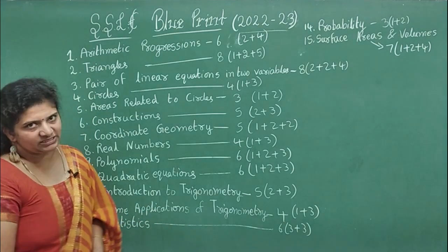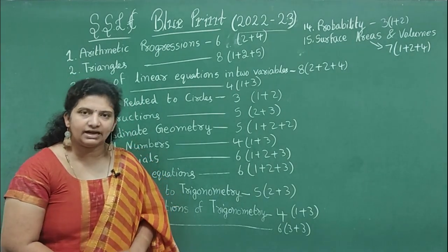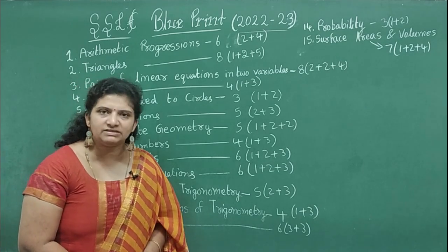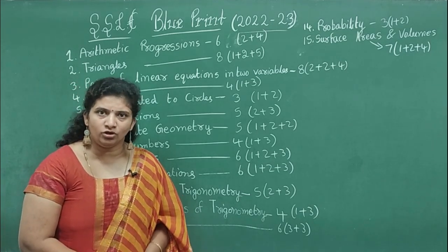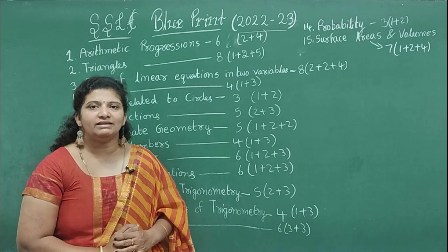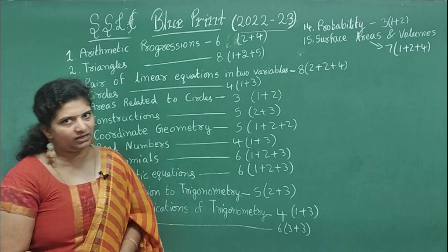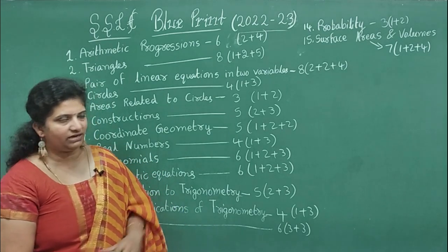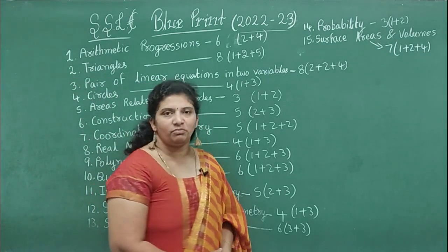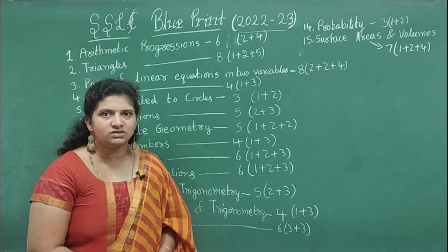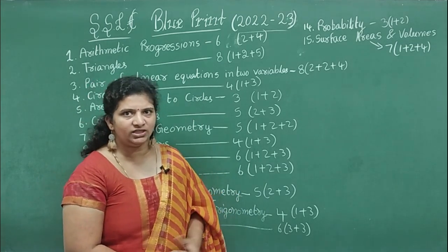Thirteenth chapter, Statistics - 6 marks. We all know that in statistics four questions are compulsory, among the four you need to write two, and internal choice will be given. Two questions are compulsory, each carries 3 marks, so 6 marks total. Fourteenth chapter, Probability - it carries 3 marks: one bit and one 2 marks question.